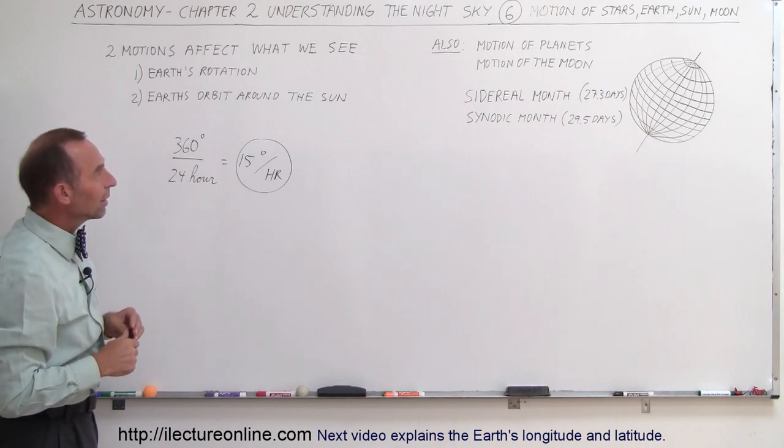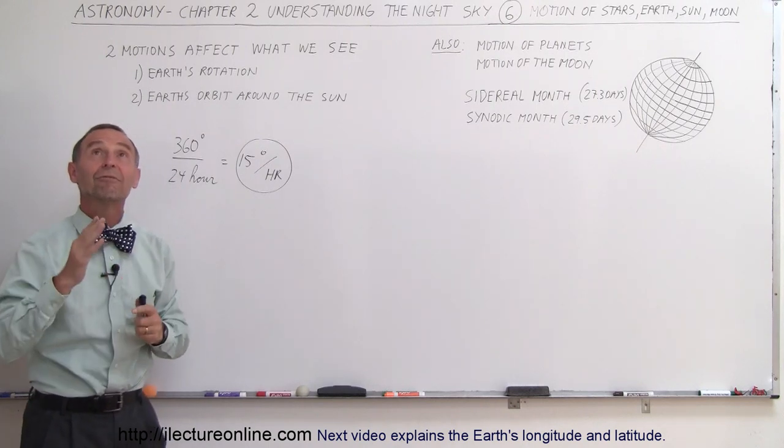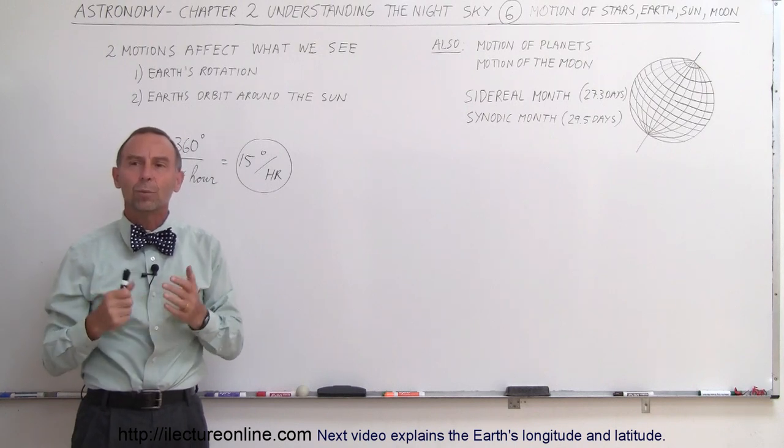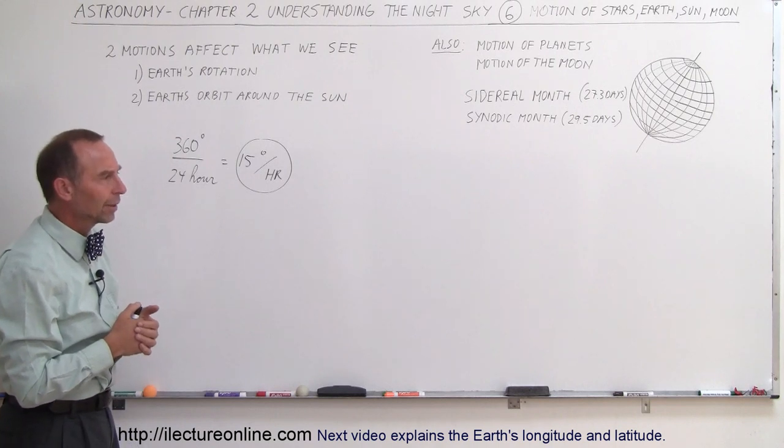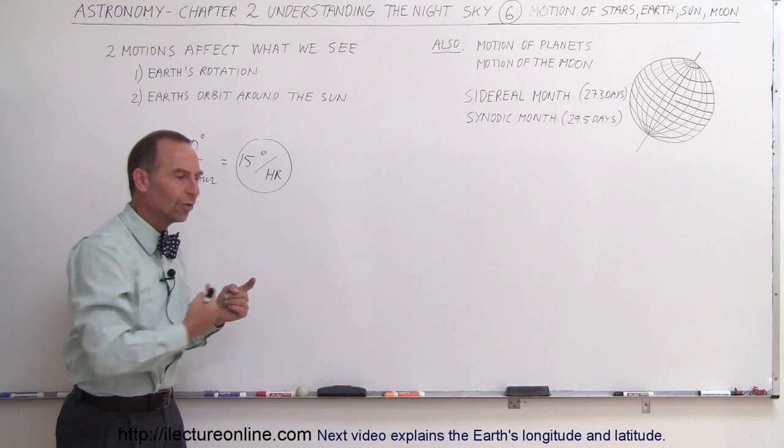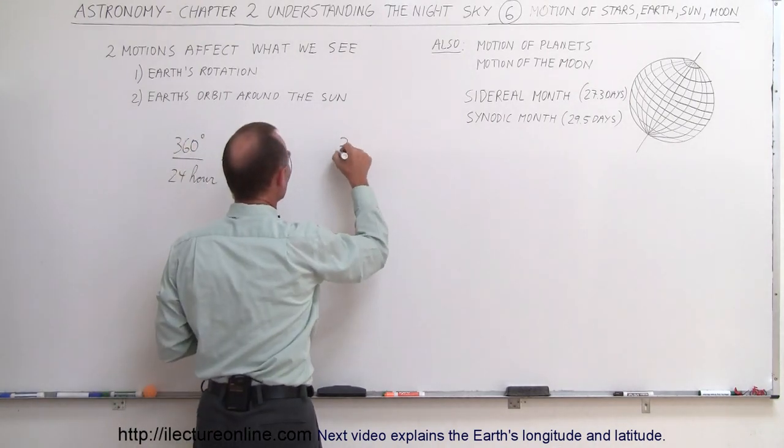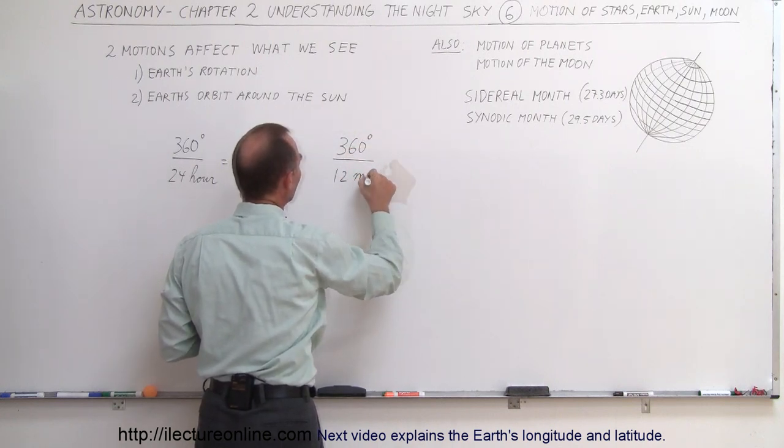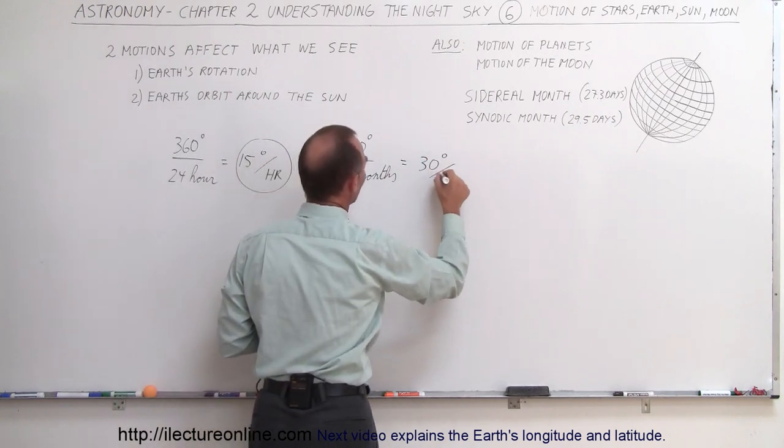Another thing that we need to think about is, how far will things move in a month? Let's say that Vega was up there at midnight at a certain time. A month later, where would we look for Vega at midnight again? Well, let's see here. If the Earth goes around the sun once per year, and that would be 360 degrees, so let's do that calculation again, 360 degrees, and we divide that by 12 months, that would be 12 goes into 360, 30 degrees per month.